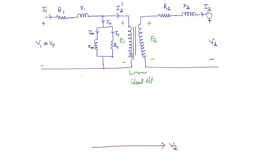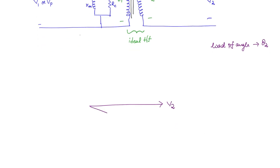Next, we have to draw I2. Once we draw I2, then we can get the drop across the elements, then we can get E2. From E2 again, you can get E1 using the voltage ratios, and then using KVL we can get all other phasors. I2 can be drawn if you know the load power factor angle — that means the phase difference between V2 and I2. So if you say it is theta2, then I2 is going to be lagging V2 by theta2. This is the current.